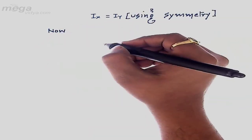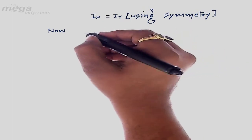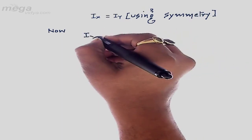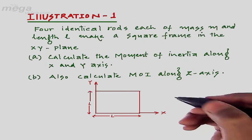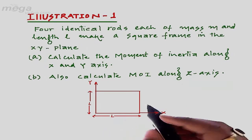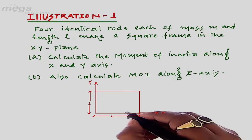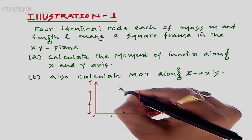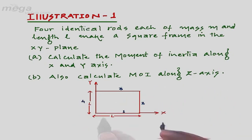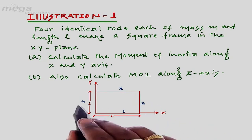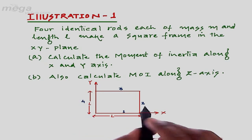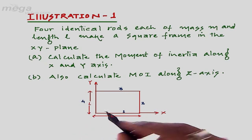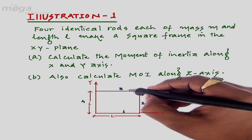Now calculating the moment of inertia of the rods along the x-axis — let's name it Ix. Coming to the figure: for the first rod, the moment of inertia will be 0. For the second and fourth rods it will be (1/3)ml², and for the third rod it will be ml².